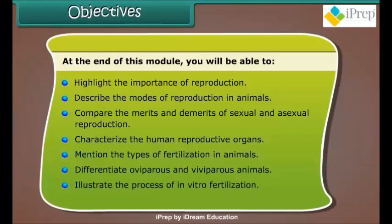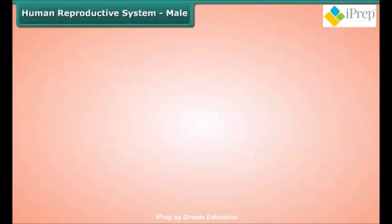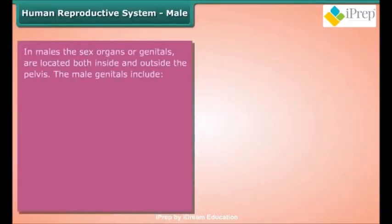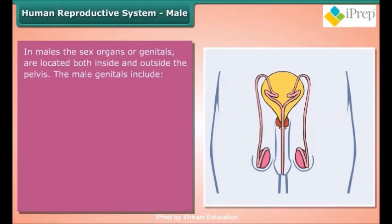Further objectives include: characterize the human reproductive organs, mention the types of fertilization in animals, differentiate oviparous and viviparous animals, illustrate the process of in vitro fertilization, and explain the phenomenon of cloning.